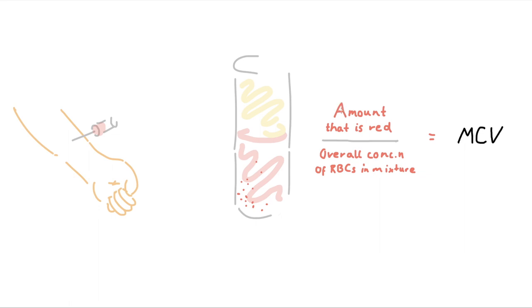If they have many cells but the cells individually are small, the overall concentration will go up, but the overall amount that's red, otherwise known as the hematocrit, will go down, resulting in a lower MCV. Alternatively, if there aren't many RBCs but the ones that are present are big, the overall concentration comes down, but the hematocrit might stay relatively normal, resulting in an increased MCV.